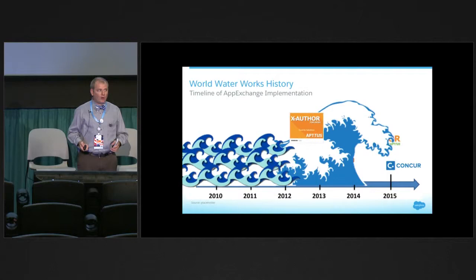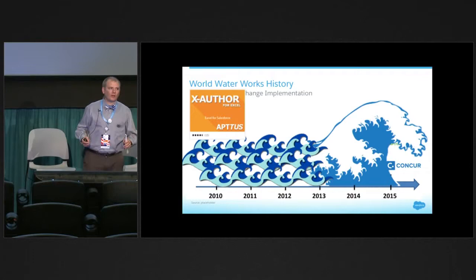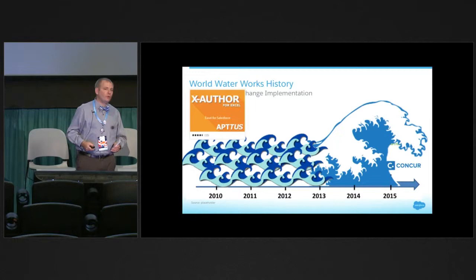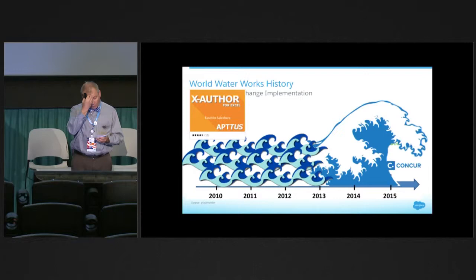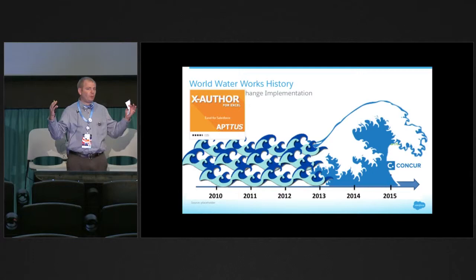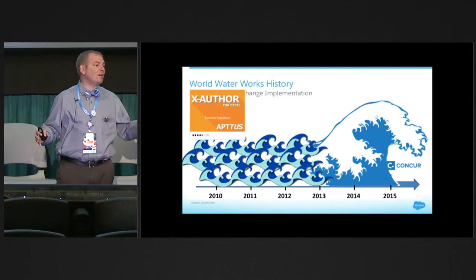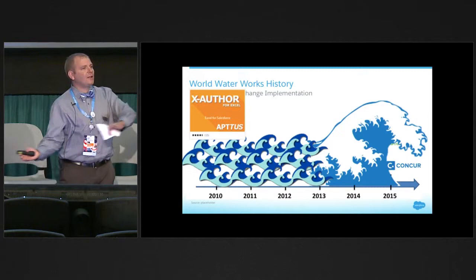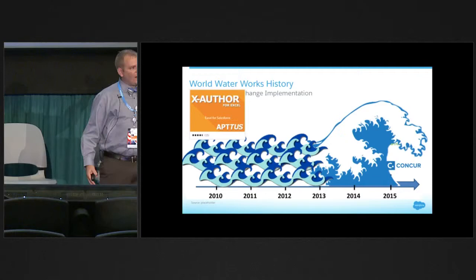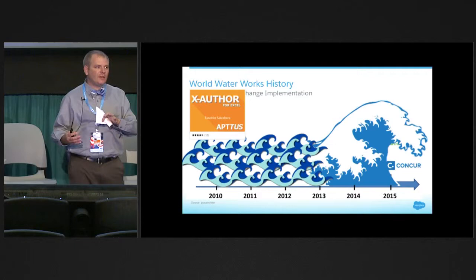Now I'm going to get to the one that really changed our world — X Author for Excel, from Aptus. They've got a booth dedicated just to this app. All those other apps I discussed, except Conga, solved a specific business problem. But with X Author, we've been able to solve a very big issue and then solve any other need that comes along. Here's how it works: it takes data from Salesforce, pulls it down into an Excel spreadsheet you've designed, allows the user to manipulate the data you allow them to, and then pushes that data right back up into Salesforce.